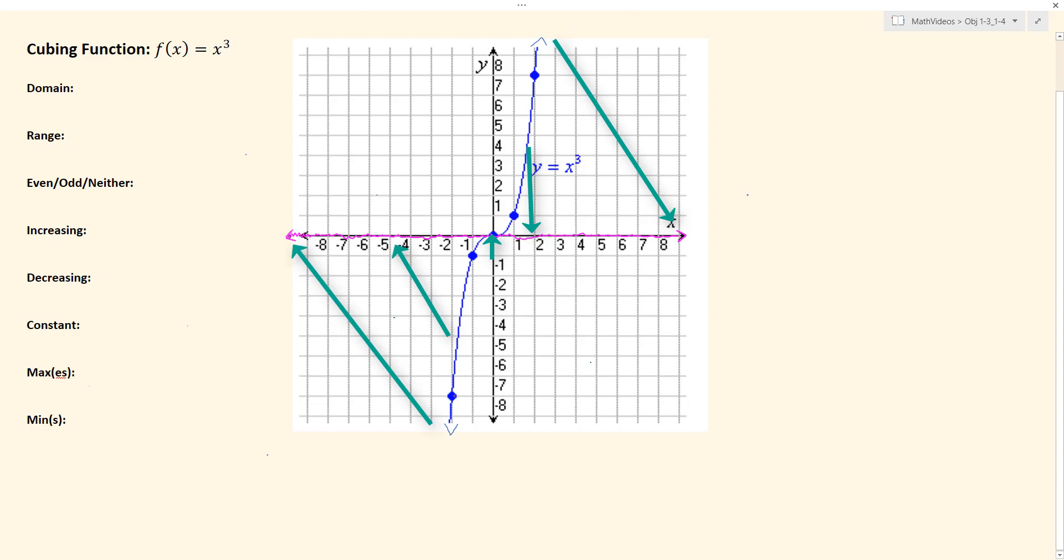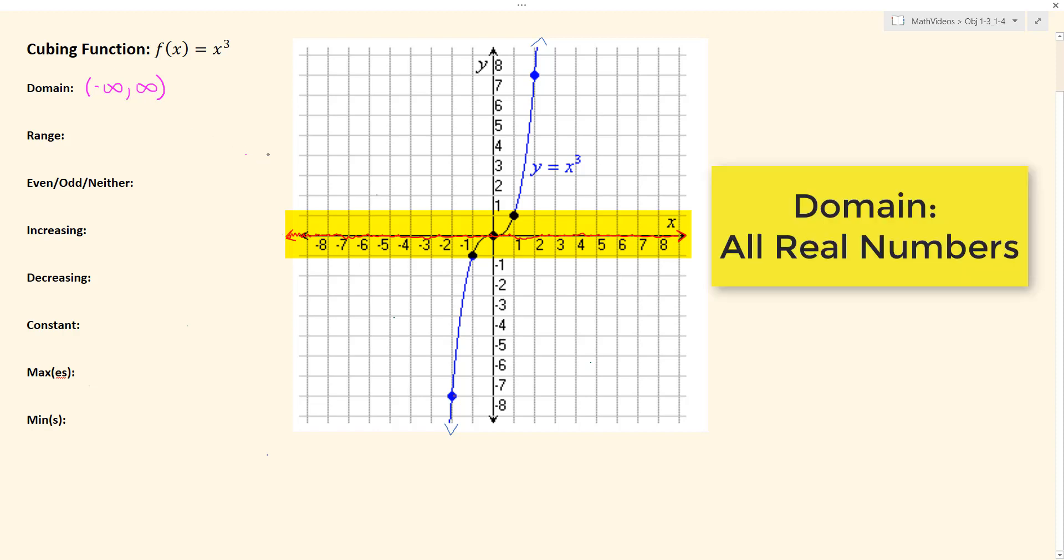And so we can see from my pink line here that I projected onto the x-axis that if this graph smashed down on the x-axis, we would hit at negative infinity to infinity. And so we would say that is the interval for the domain. And so that is another fancy way of saying all real numbers.